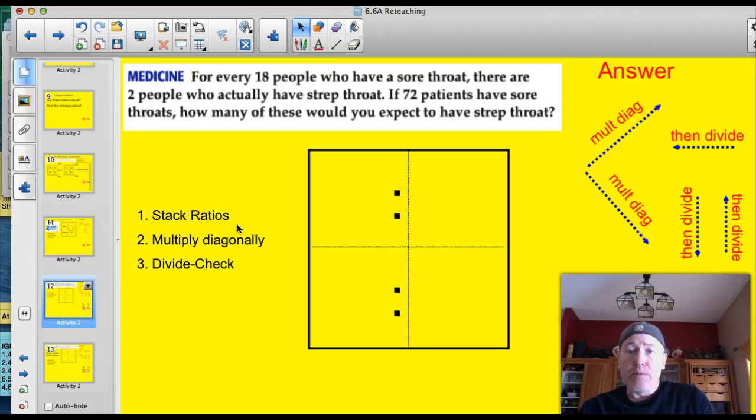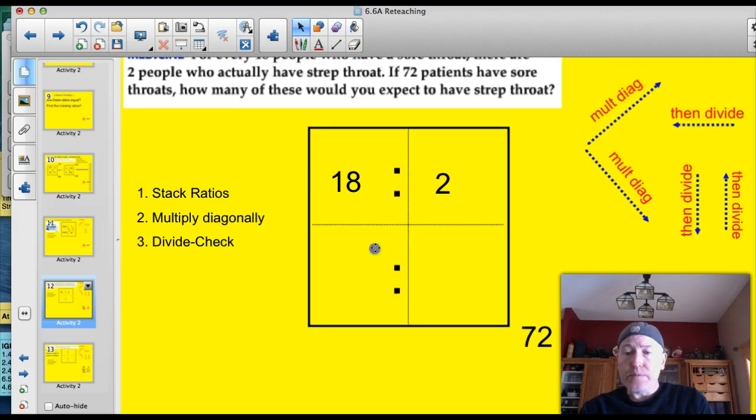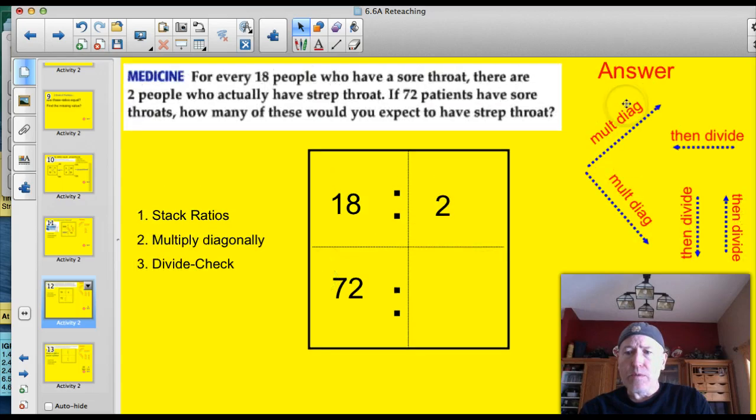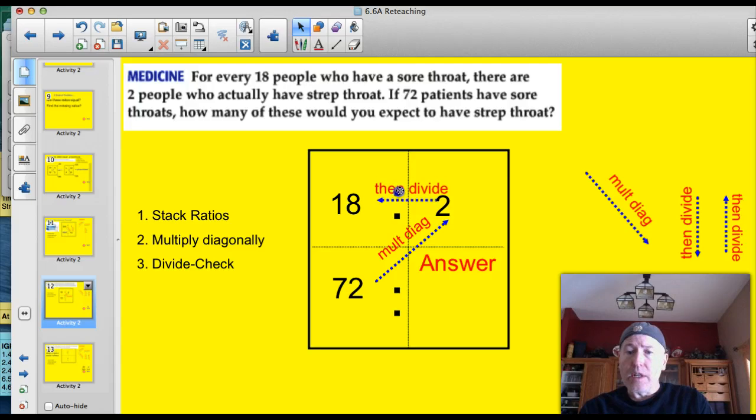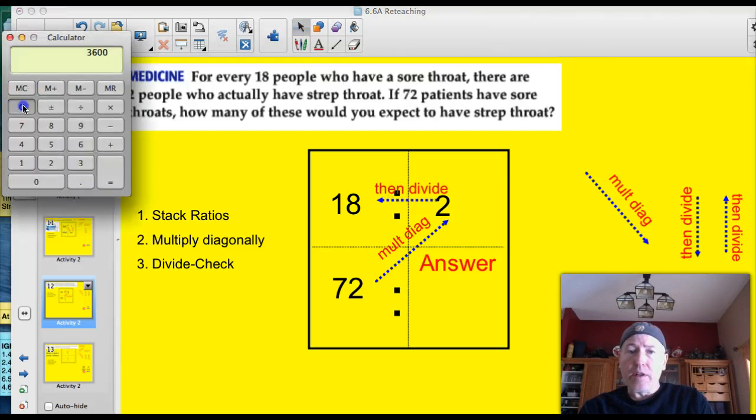Here's another one. For every 18 people who have a sore throat, there are two people who actually have strep. If 72 patients have sore throats, how many of these would you expect to have strep? Well, let's set it up. We've got 18 people with sore throats. There is two who have strep. So, 72. And this is where we're looking for our answer down here. We're not sure what that number is, so I'll just place that up there. Well, let's do it. Let's multiply diagonally. And then we're going to divide the other two numbers.